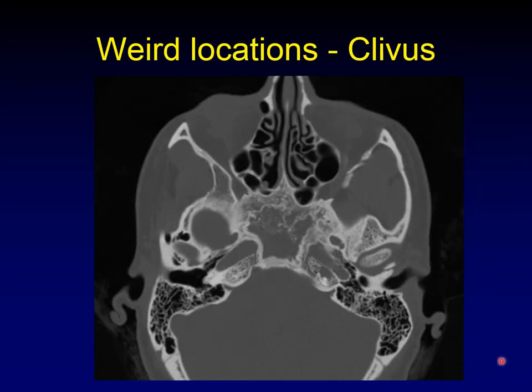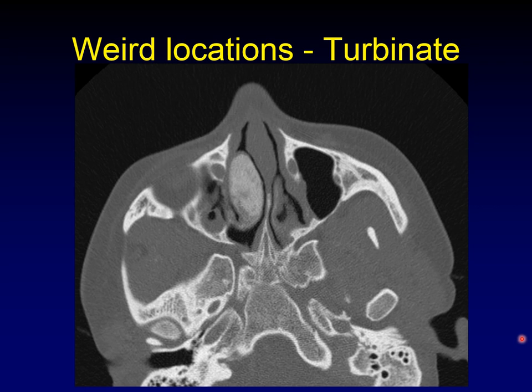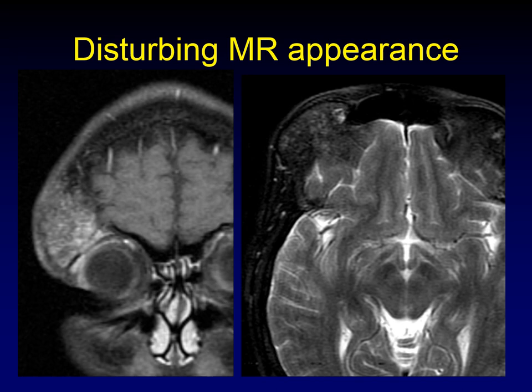Fibrous dysplasia famously occurs in the mid-face, but it can really occur anywhere. Here's an example of the pagetoid form of fibrous dysplasia occurring within the clivus, and another example occurring within one of the turbinates. Despite having a benign CT appearance, the MR appearance of fibrous dysplasia can be very disturbing and easily mistaken for a tumor — there is a whole separate lecture on a case trying to fool you into thinking it is something more aggressive.